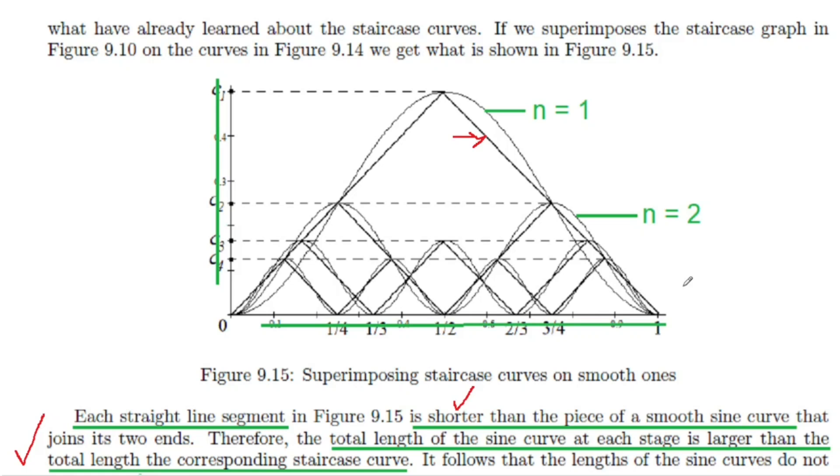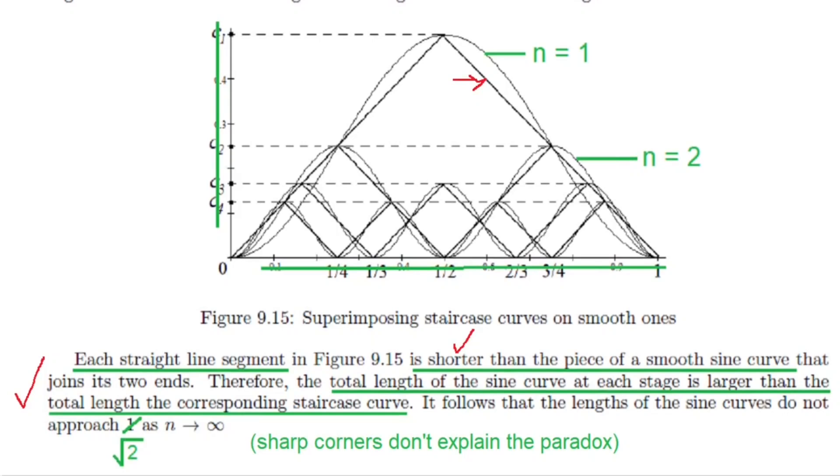Therefore, the sine curves must have length bigger than 2, which is, of course, bigger than the square root of 2, 1.4142. And that's just the length of the diagonal. So we see that sharp corners don't explain the paradox.